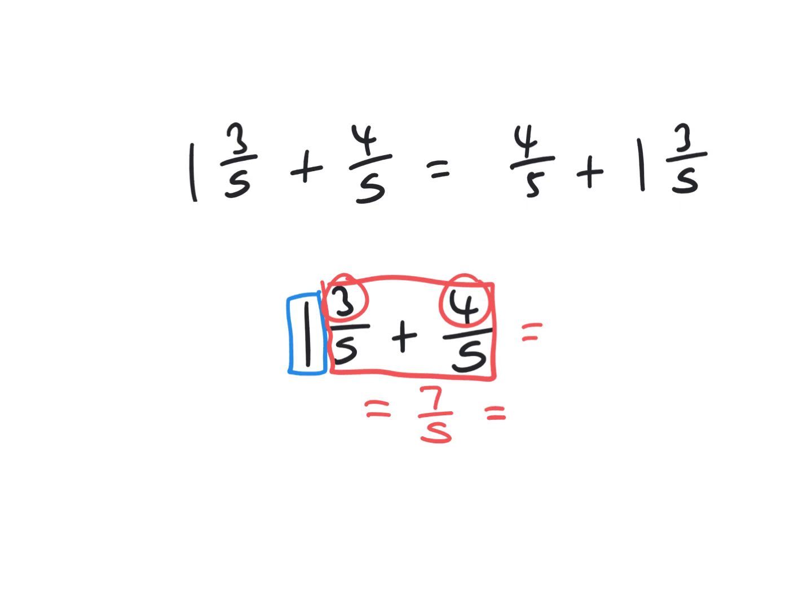So let's have a look. 7 divided by 5 - how many fives fit into 7? Well that's 1 and that leaves 2 fifths left over. Now we've also got the original 1 here in blue. So if we add that extra 1 here all together we're going to have 2 and then the 2 fifths to give us our final answer.